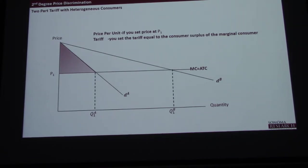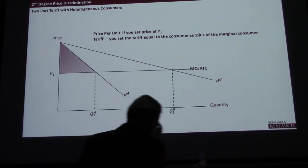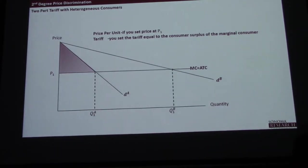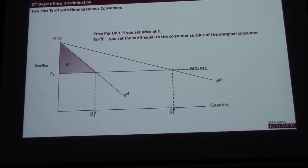So you have to set the tariff equal to the consumer surplus of the marginal consumer. My profits — I'm not making any money off per-unit sales, I'm making my money off the tariff or membership fee. If I set my membership fee equal to the surplus of the marginal consumer, consumer A is going to pay it. And clearly consumer B is going to pay it because their consumer surplus is that really big triangle. So my profits are going to be two times that triangular area.